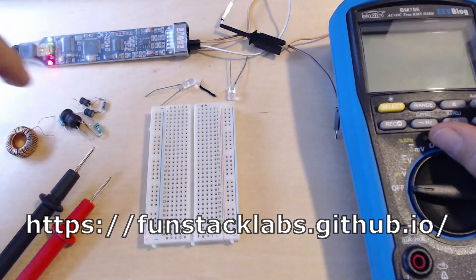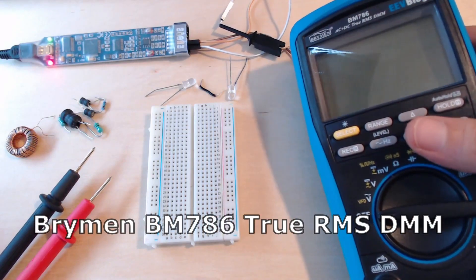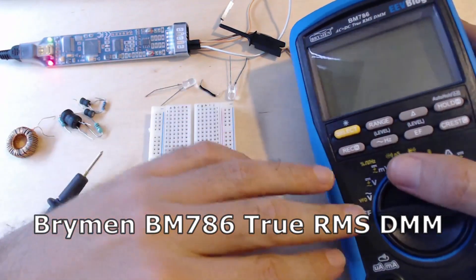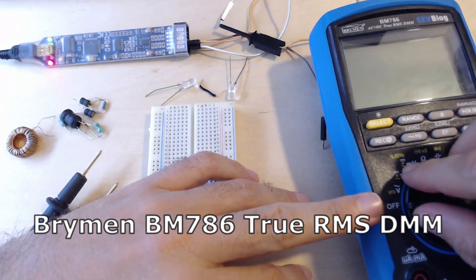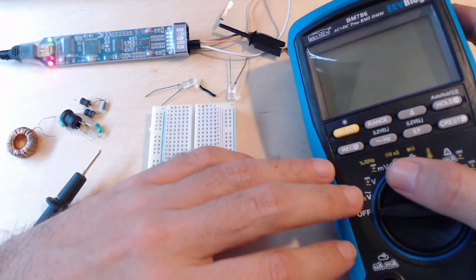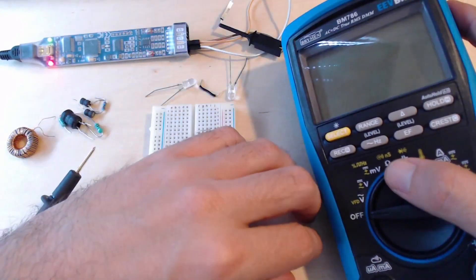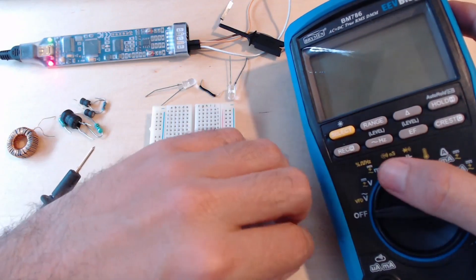The multimeter I have here is a Brymen BM786 true RMS digital multimeter, and it can do pretty accurate AC readings in the millivolts level. You can use any multimeter that you want, but the precision of this method depends on the precision of your multimeter with AC signals in the millivolts level.